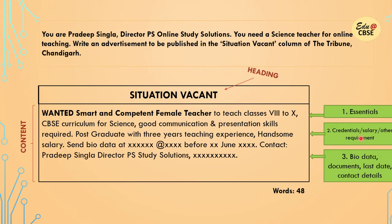The logical order: first, the essentials — what is the requirement, what is wanted, that comes at the top. Then credentials, salary, and other requirements — that is the second point. Then, if bio data is needed, walk-in interview, last date, and contact details — that comes in the third part. So essentials in the first full stop, credentials and requirements in the second, and contact details in the third. This is the logical order.